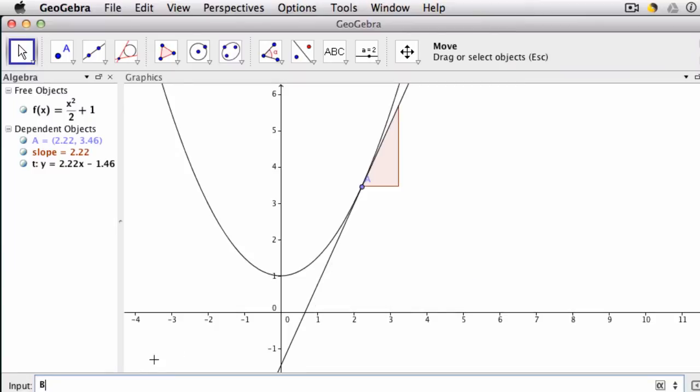Now what I'm going to do is create a point B. So B, uppercase B, equals x in parentheses A, and that tells GeoGebra, create a point B so that the first value, the x value, is the same as the x value of your A point. So those x values will match.